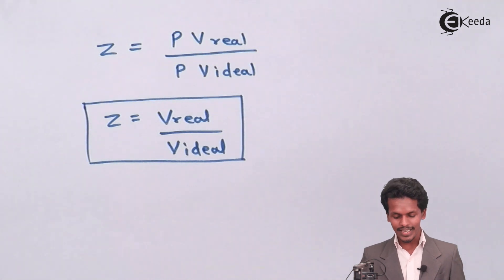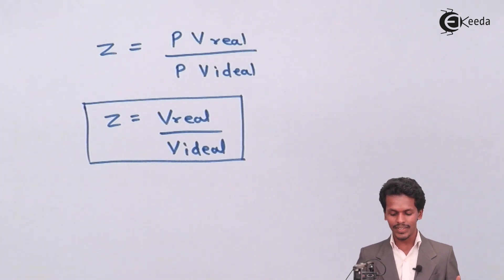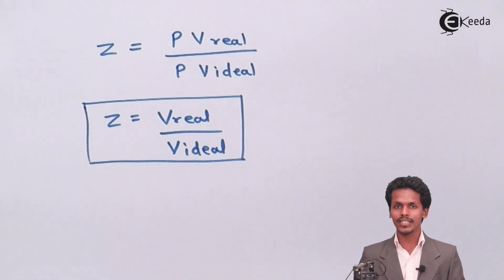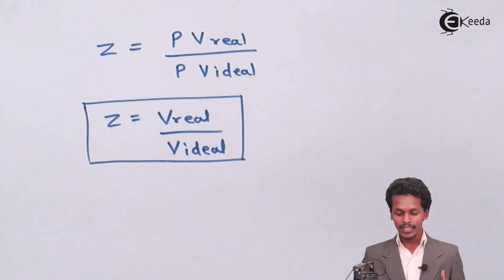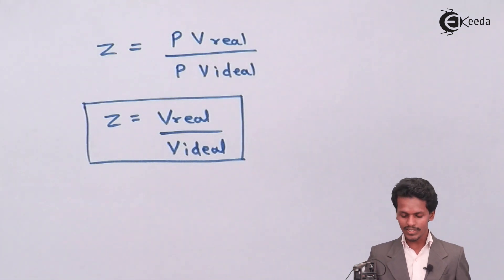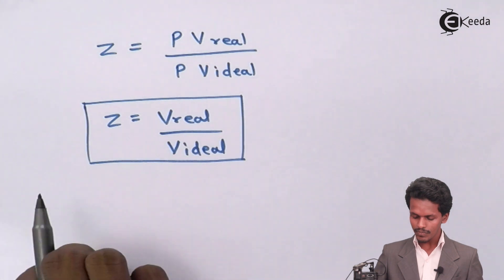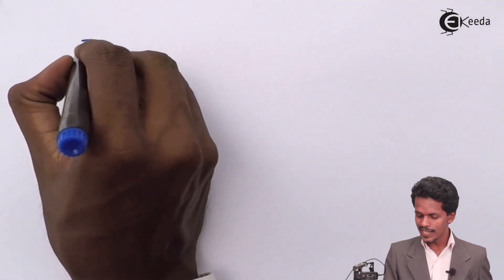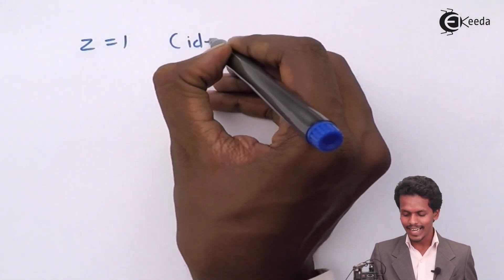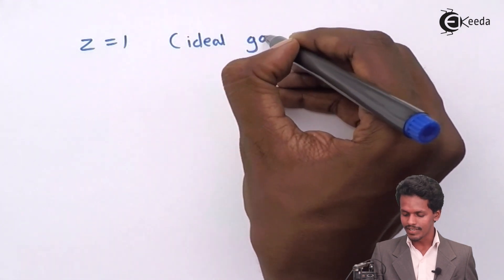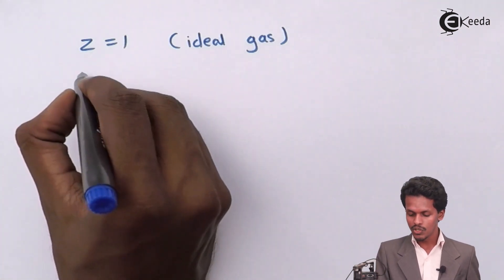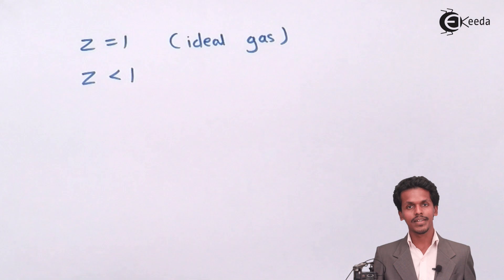Using Z equals V real divided by V ideal, we can deduce compressibility. If Z equals 1, it is a clear indication that the gas is behaving as an ideal gas. When the value of Z is less than 1, that means the volume of the real gas is less than the volume of the ideal gas.